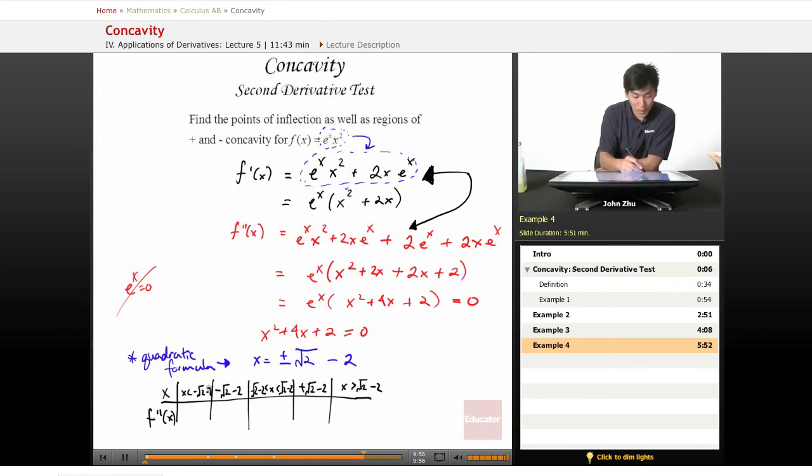So plug in arbitrary values to find the behavior of this function. When x is less than this value, we can use a very large negative number to examine it. We'll find that it's going to be positive. A very large negative number squared is a very large positive number minus a smaller negative number—we're still going to be positive.